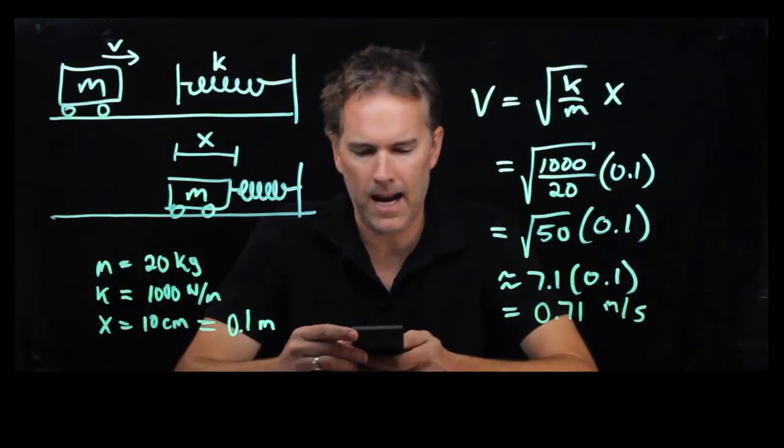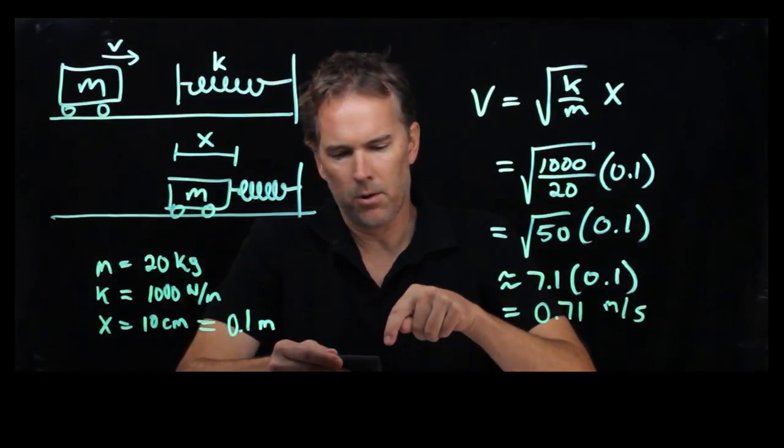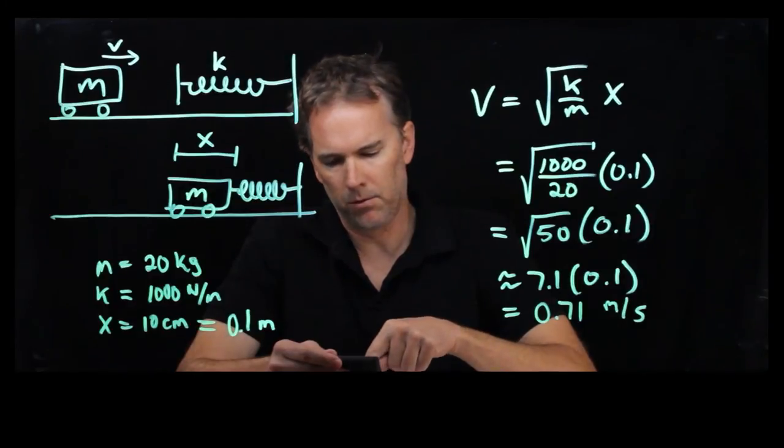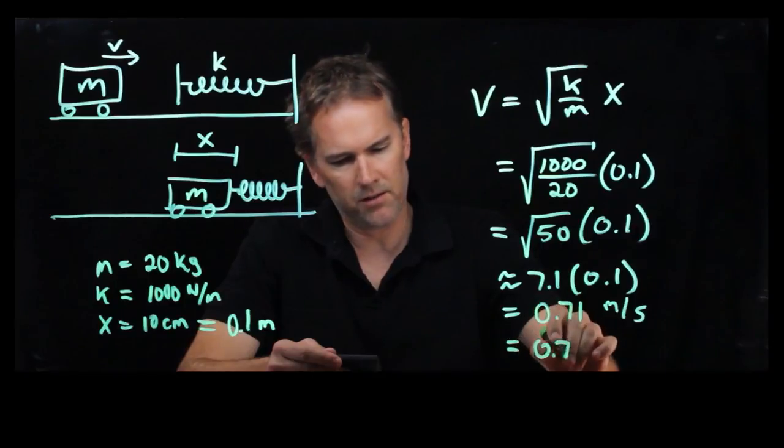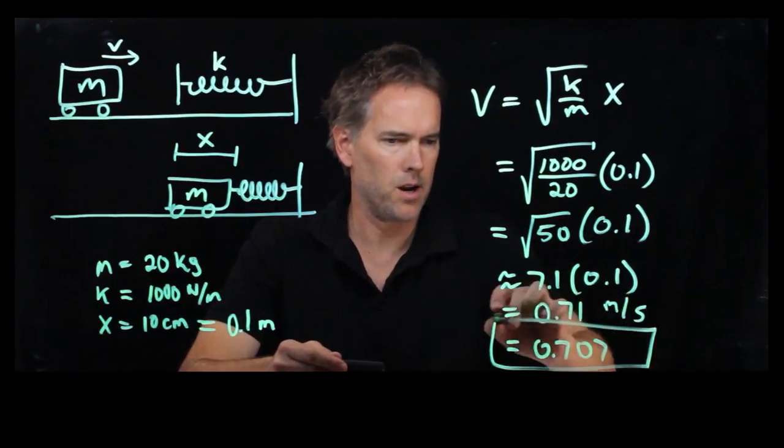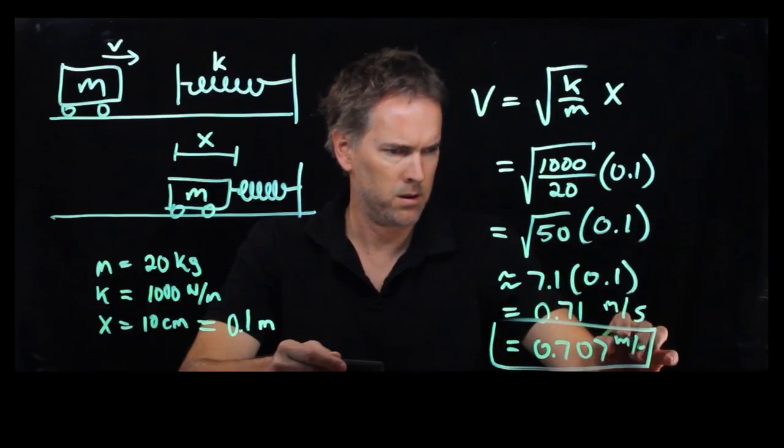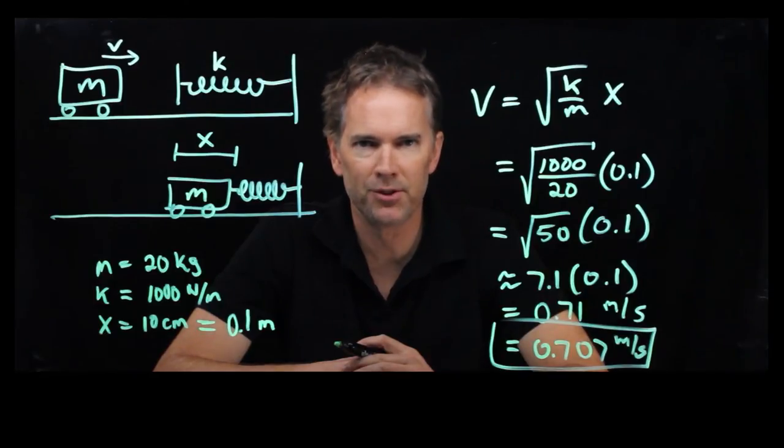Let's just try it with our handy dandy calculator and double check. 50 square root times 0.1 is 0.707. So our guess was nearly right on the money, meters per second. Okay, hopefully that's clear. Cheers!